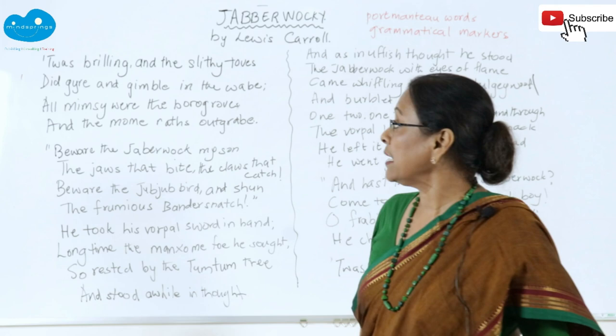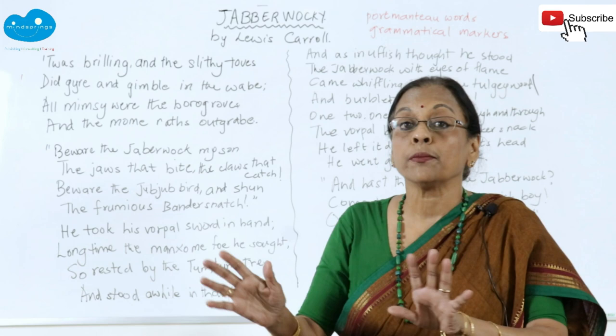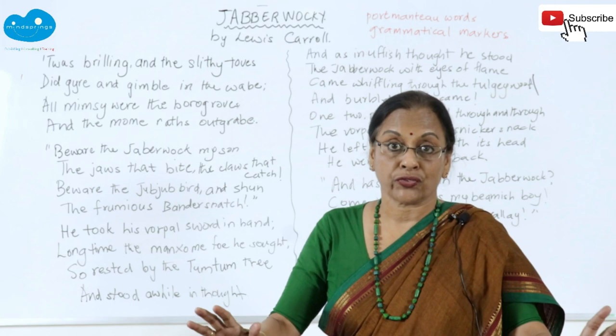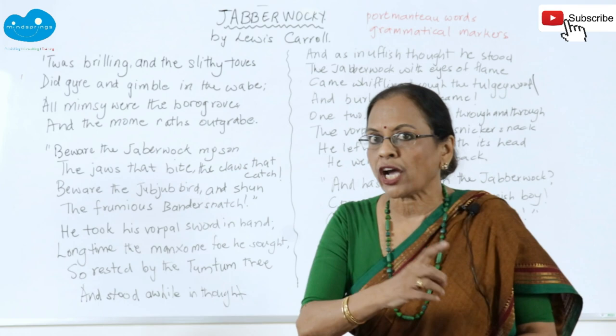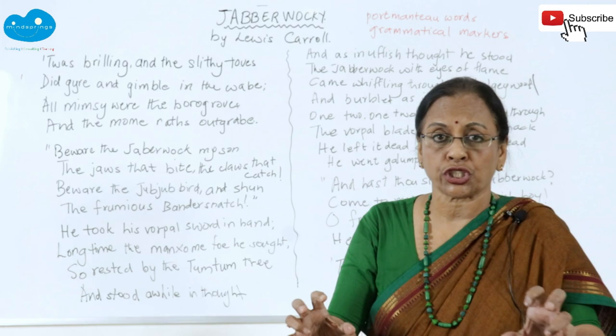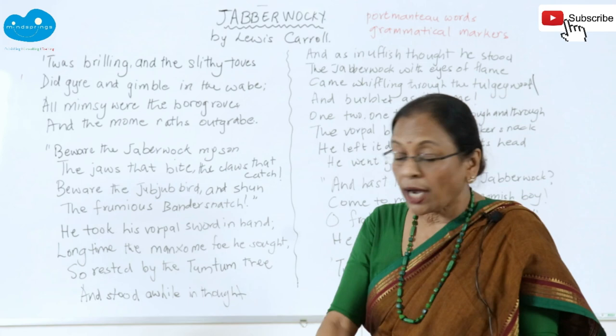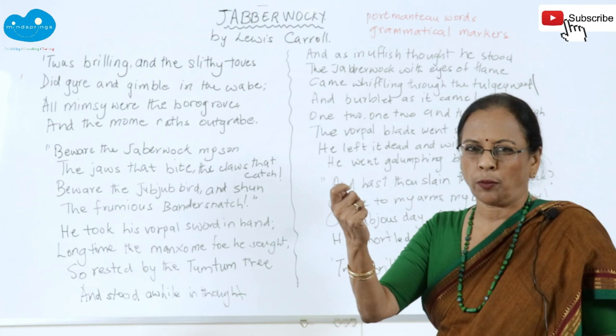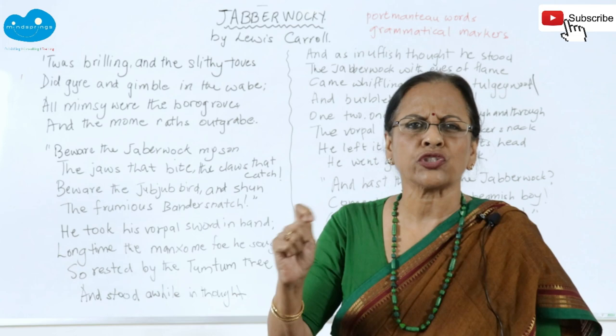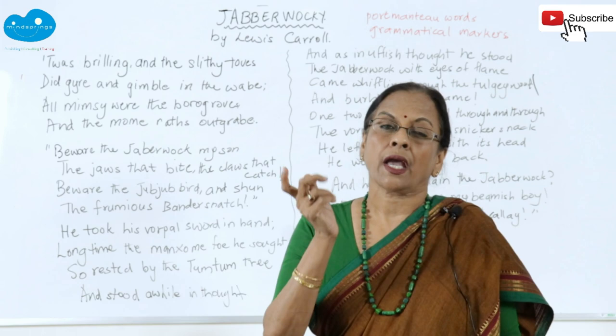Jabberwocky by Lewis Carroll. 'Twas brillig, and the slithy toves did gyre and gimble in the wabe. All mimsy were the borogoves, and the mome raths outgrabe. Beware the Jabberwock, my son! The jaws that bite, the claws that catch. Beware the Jubjub bird and shun the frumious Bandersnatch! He took his vorpal sword in hand, long time the manxome foe he sought. So rested he by the Tumtum tree, and stood a while in thought.